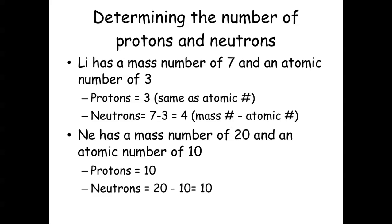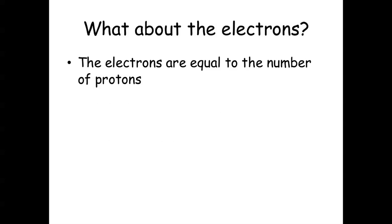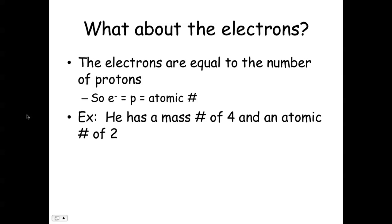Don't get confused — the neutrons don't have to match like that. Electrons equal protons equal atomic number. Helium has a mass number of four and an atomic number of two, so it has two protons. Four minus two is two, so it has two neutrons. And electrons always equal the number of protons in an atom, so it has two electrons as well.